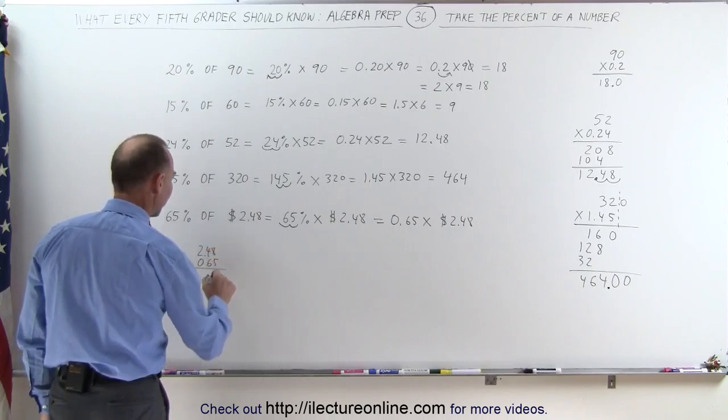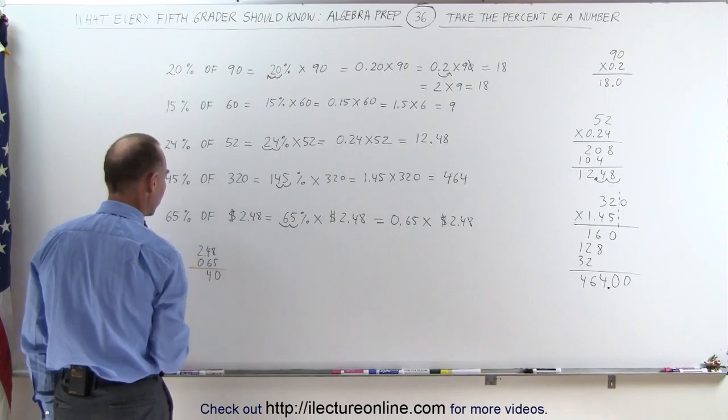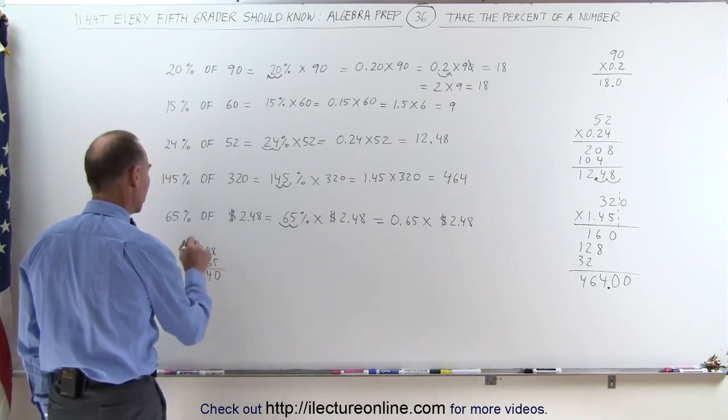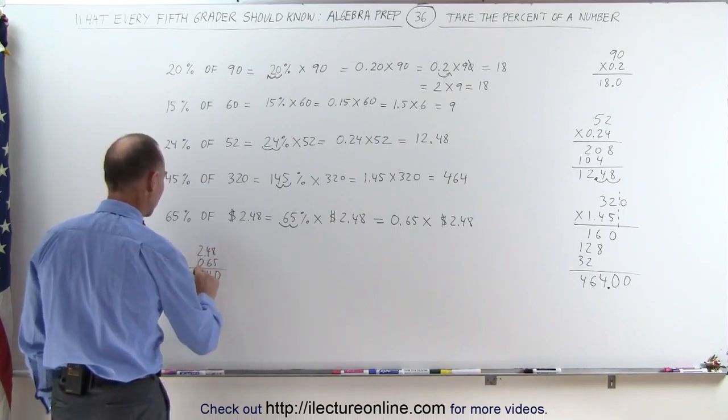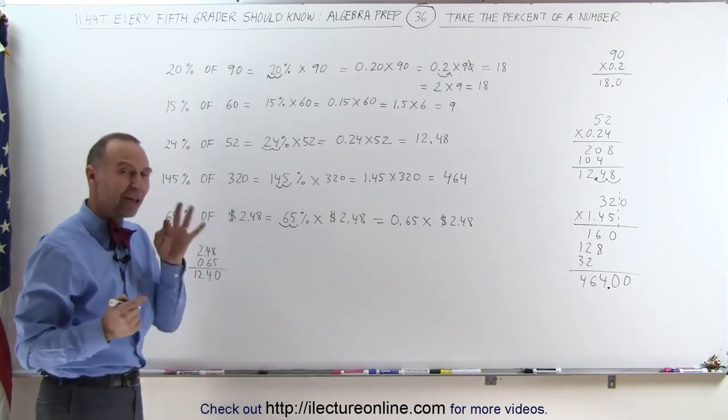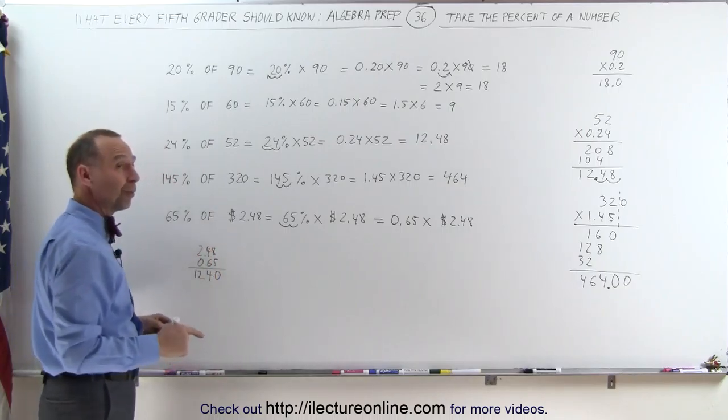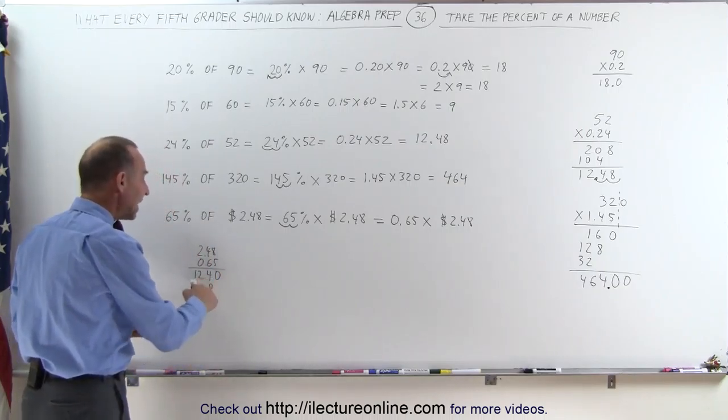5 times 8 is 40, put down the 0, remember 4. 4 times 5 is 20 plus 4 is 24, write down the 4, remember 2. 2 times 5 is 10 plus 2 is 12. You may not realize it, but when I remember those numbers, I use my fingers to memorize them. 6 times 8 is 48. I write down the 8 and keep 4 fingers ready, so I remember I need to remember 4.